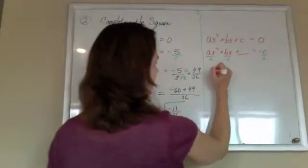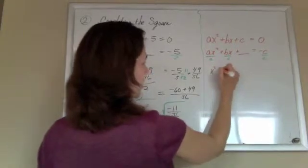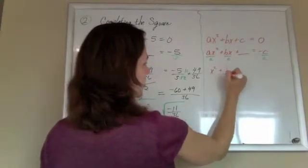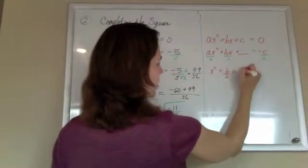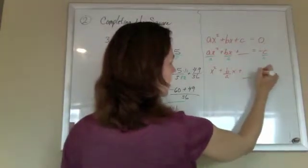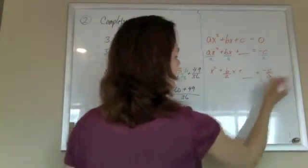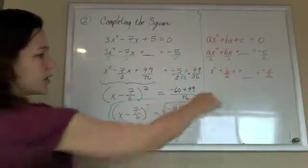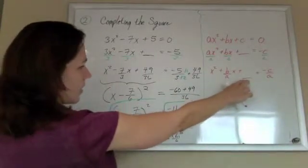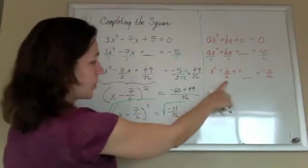So I'm left with x squared plus b over ax, and I'm going to add something here, equals negative c over a. So the number I'm going to add there, half and square that middle number.